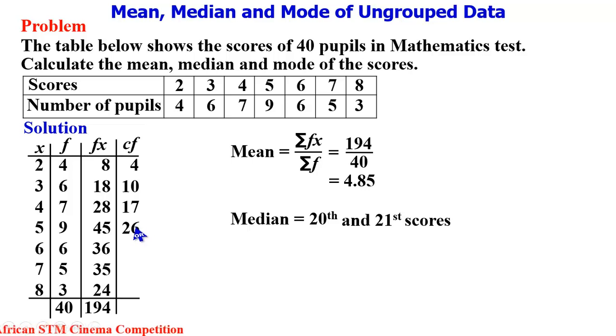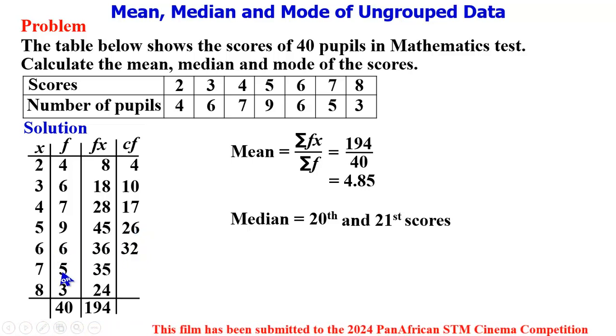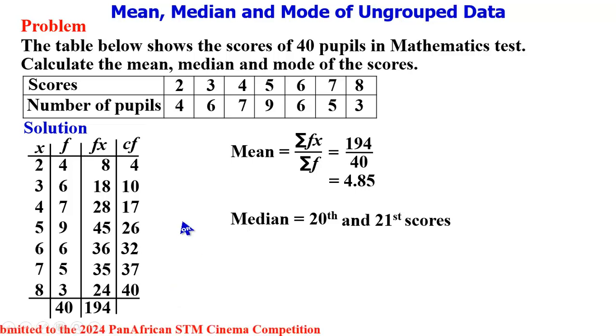32 plus 5 gives 37, and 37 plus 3 gives 40, confirming the total population of the pupils in the test.